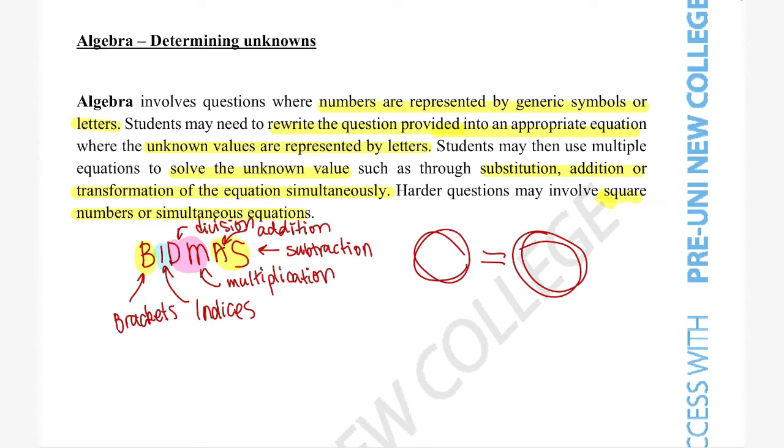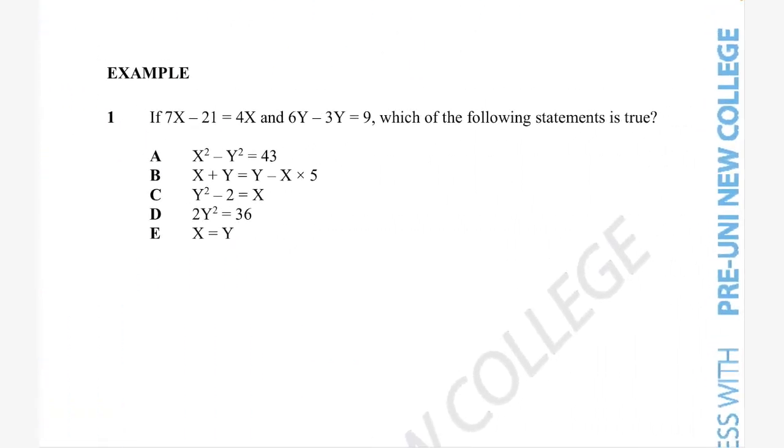So to get a really good understanding, it's always really helpful to try a sample question. Now, this sample question isn't obviously going to give us all the information for every single algebraic equation. So the big takeaway is to kind of get the technique that you use rather than the answer for this specific question. So what we see here in this example question is we're given two equations, one that says 7x minus 21 is equal to 4x and 6y minus 3y is equal to 9. Then it asks us which of the following statements are true.